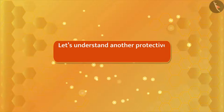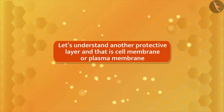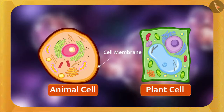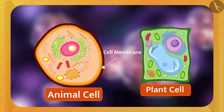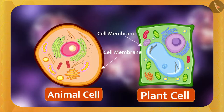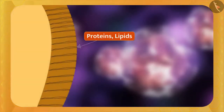Now let's understand another protective layer — the cell membrane, also called the plasma membrane. The cell membrane is the outermost layer of the animal cell. It separates the parts of the cell from the external environment, and it is present in both plant and animal cells.